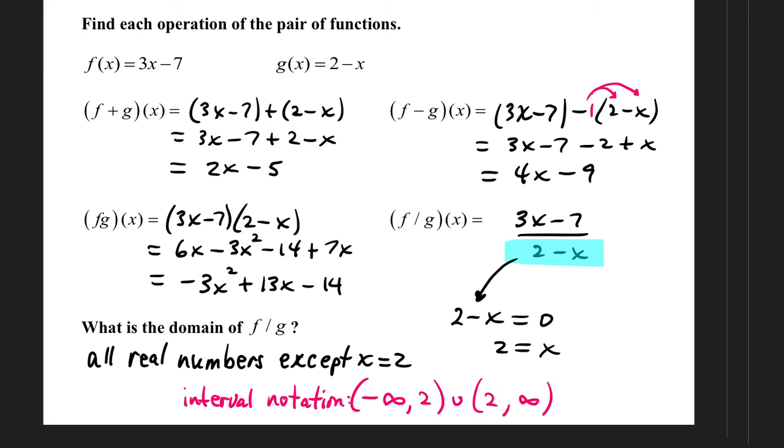This pair of functions, we have f of x equals 3x minus 7, and g of x equals 2 minus x. Again with the sum, you can just directly write your functions down and add. 3x minus x is 2x, negative 7 plus 2 is negative 5.